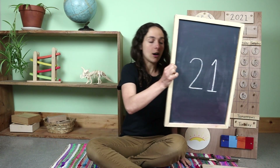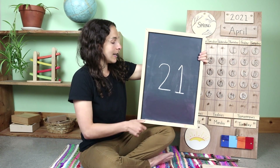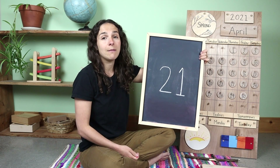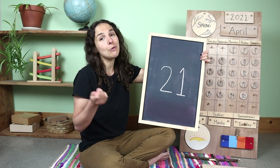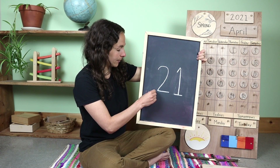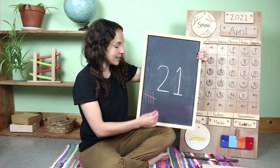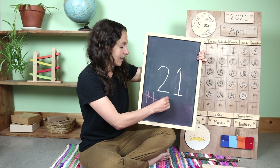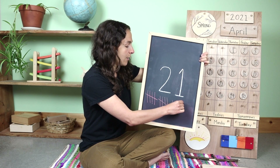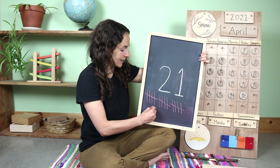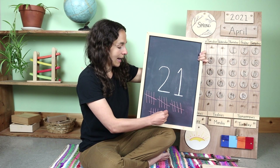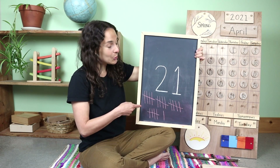Let me grab my piece of chalk and we can draw tally marks together. Friends, if you'd like to take something out and draw tally marks with me at the same time, you can do that. If not, you can just count along with me. Here we go: one, two, three, four, five goes across, six, seven, eight, nine, ten goes across, eleven, twelve, thirteen, fourteen, fifteen goes across, sixteen, seventeen, eighteen, nineteen, twenty goes across, and one more makes 21. Twenty-one tally marks.